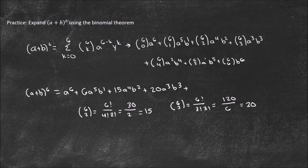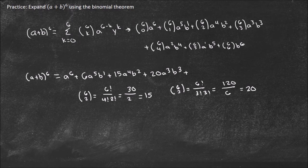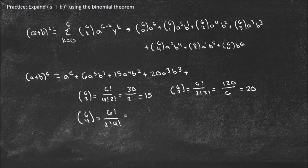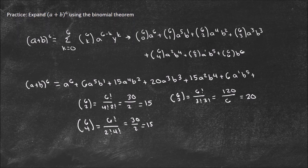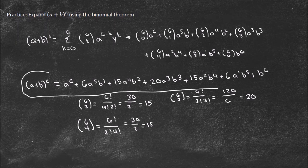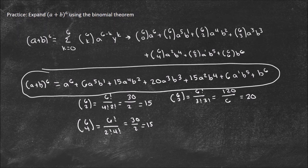Now 6-choose-4: a useful property is that 6-choose-4 equals 6-choose-2, since the factorials are the same — that gives us 15 again. So + 15a²b⁴. The coefficients are symmetric: the middle term is 20, one out is 15, two out is 6, and the ends are 1. So + 6ab⁵, and finally + b⁶. This is the fully expanded form of (a + b)⁶. We'll learn Pascal's Triangle soon, which is another way to see why the coefficients are symmetric.